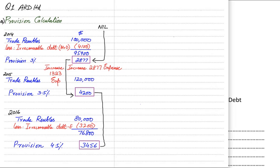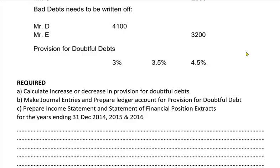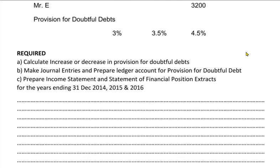In the third year, from 2015 to 2016, the doubt is not increasing — instead it is decreasing. If the doubt is decreasing it is good for the business, so it is income. Remember: in the first year the doubt always increases. In the second year, if the doubt increases further it is an expense; if the doubt decreases it is income. These were the first requirements — we calculated increase or decrease in provision for doubtful debt.